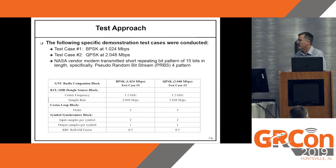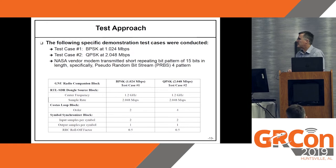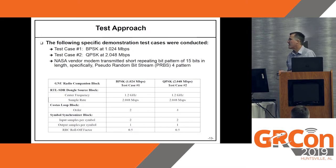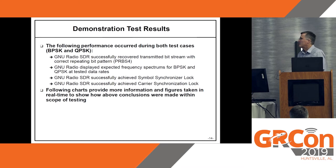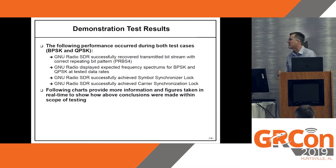The test approach: I did two test cases, BPSK and QPSK. The settings on the blocks in the flow graph were pretty much the same for both modulations, except for the Costas loop block — the order was different, and that was about it. I used a repeating 15-bit pattern for the testing. During the testing, performance was good: I was able to recover the transmitted bit stream from the modulator, achieved symbol synchronization lock, and achieved carrier synchronization lock.